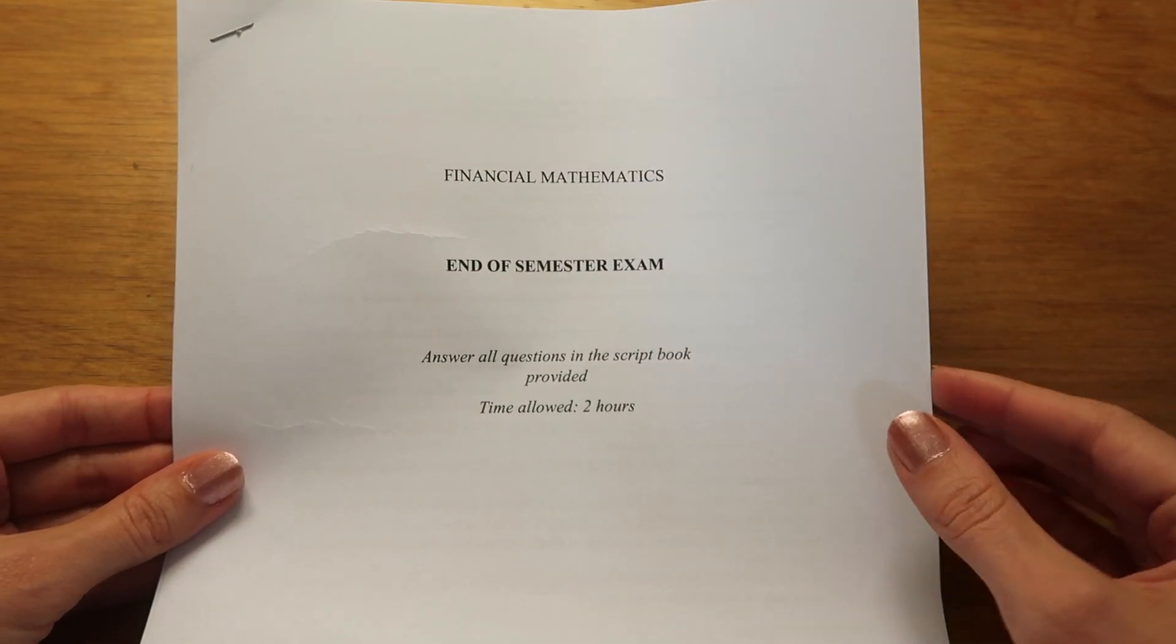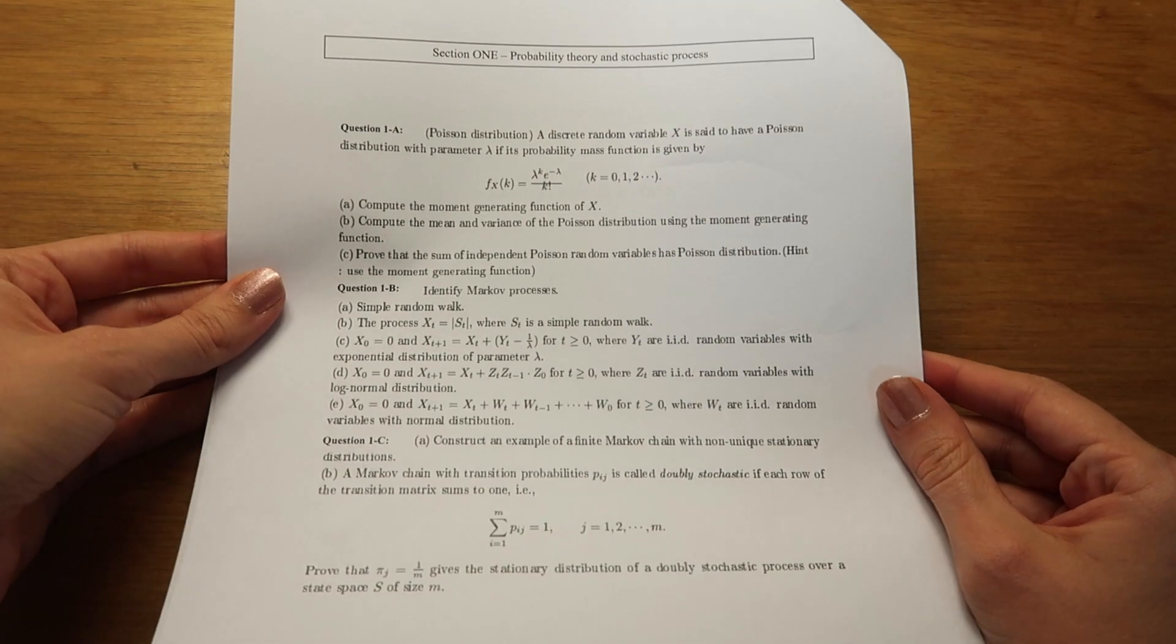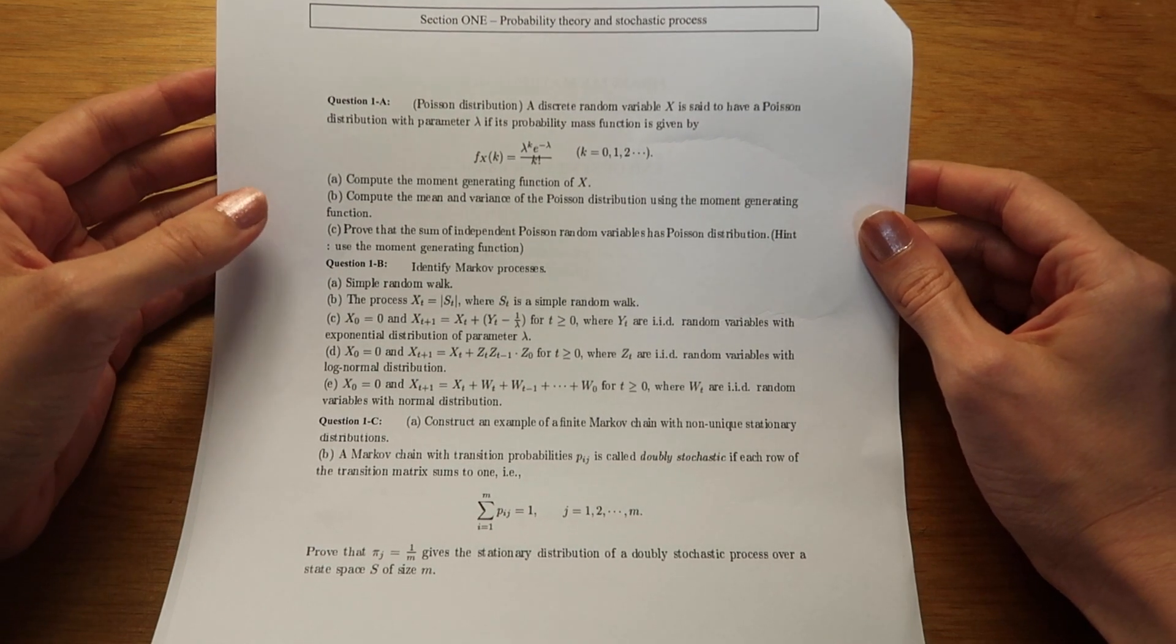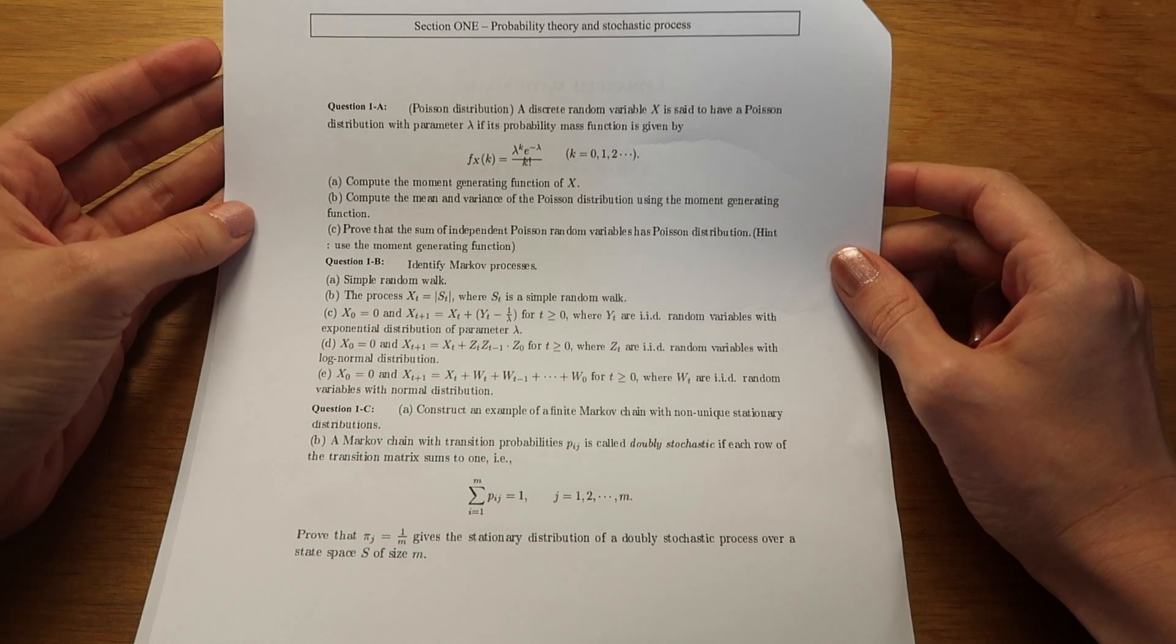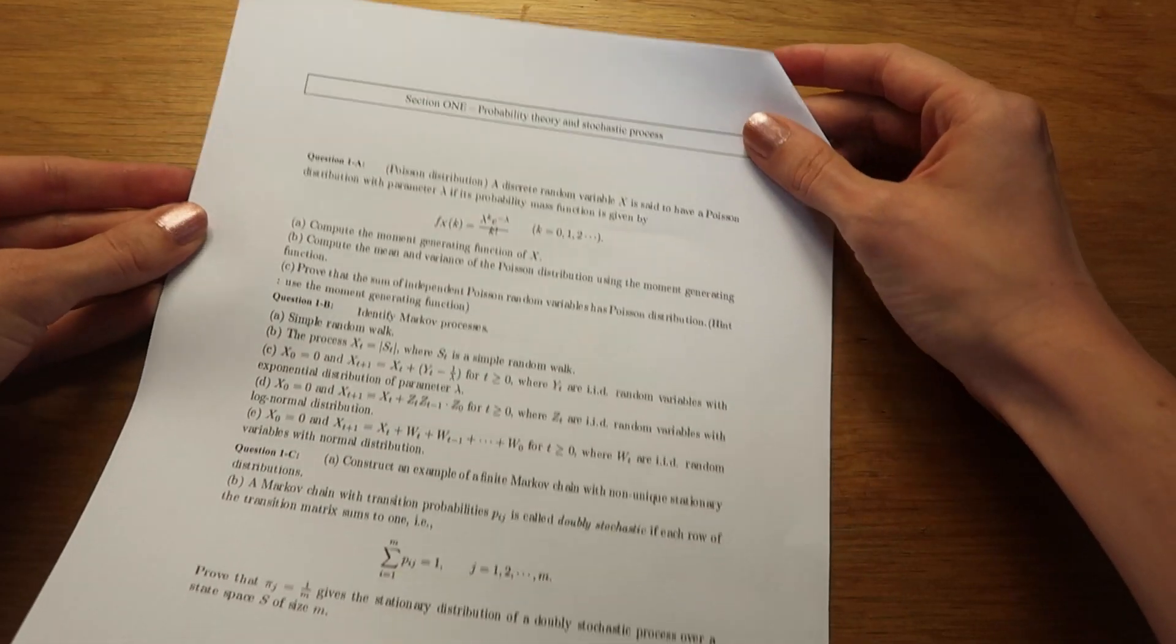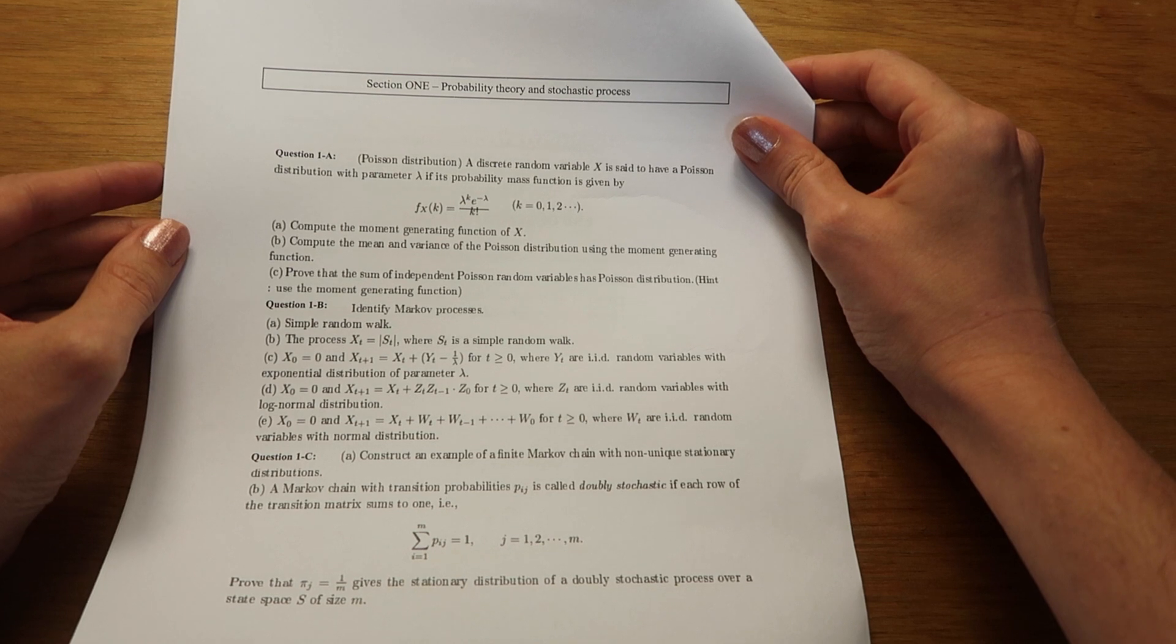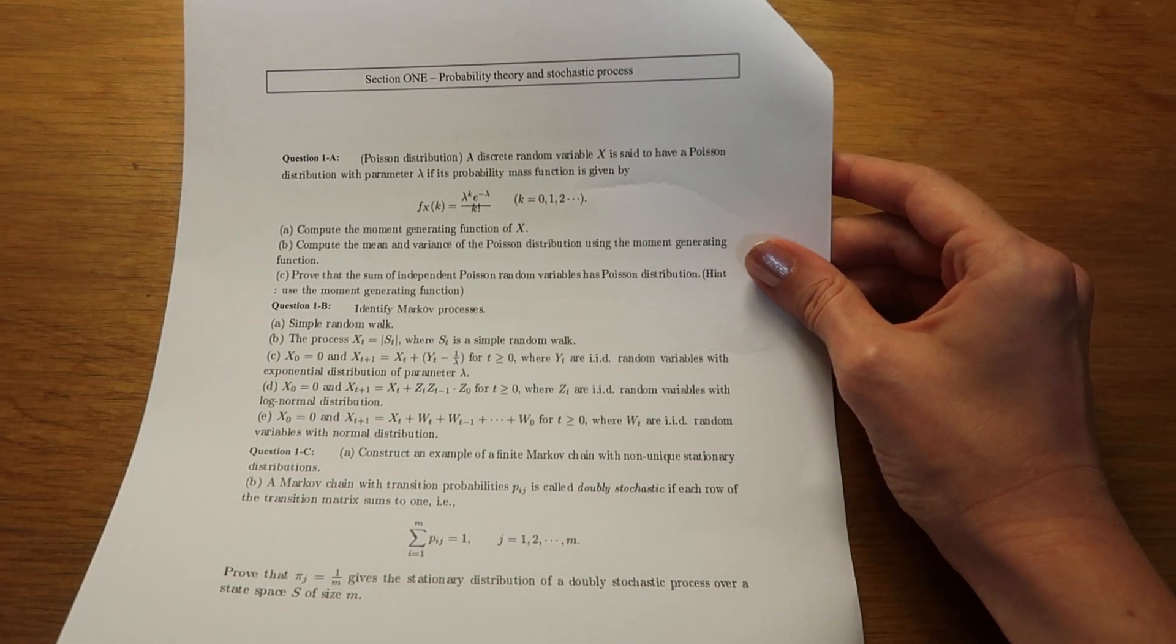There will be a link in the description for you to download this exam so you can read along with me. There's no solutions provided but I will put links to where a lot of the questions have come from. This exam is in three sections. Section one here is probability theory and stochastic processes. Probability sort of makes sense to have in a finance exam because financial markets are full of uncertainty. Stochastic process refers to random processes or at least seemingly random processes. There are actually a lot of stochastic processes in all fields of science—physics, chemistry, neuroscience, computer science. Learning stochastic processes and how to deal with them is not just going to help you in finance but in a lot of fields of science.